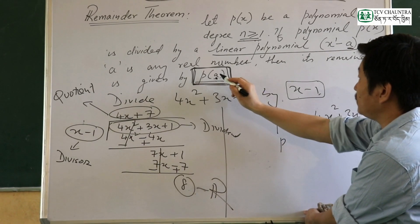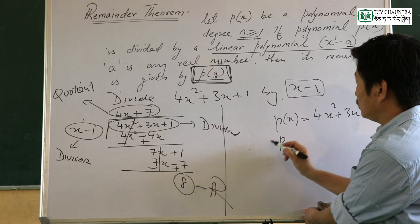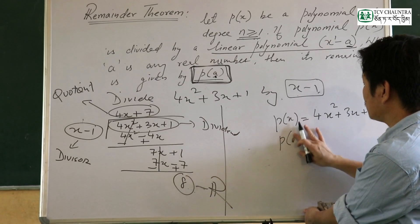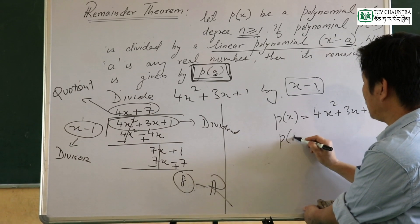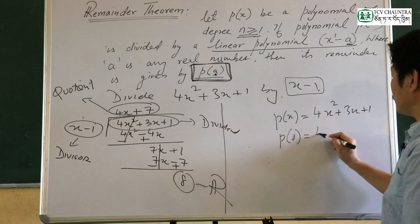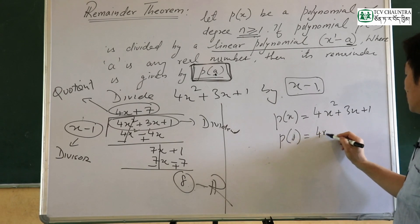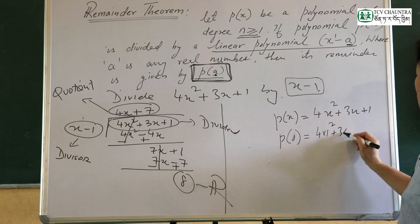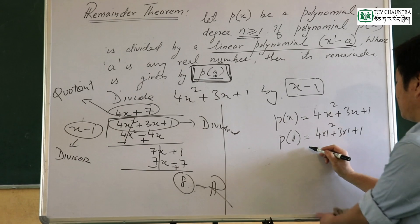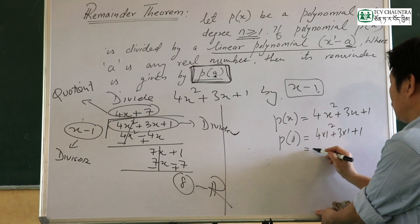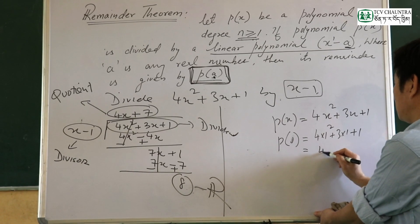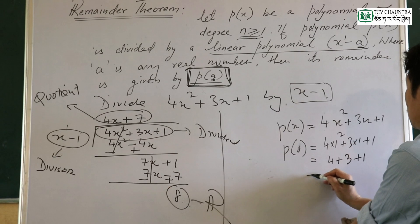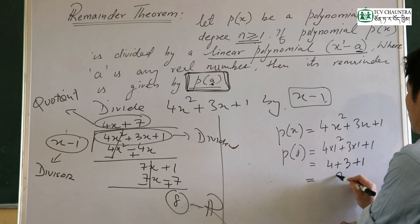The remainder is given by a polynomial. By remainder theorem, a is equal to 1, so we substitute x equals 1. Therefore, 4 plus 3 plus 1 equals 8.